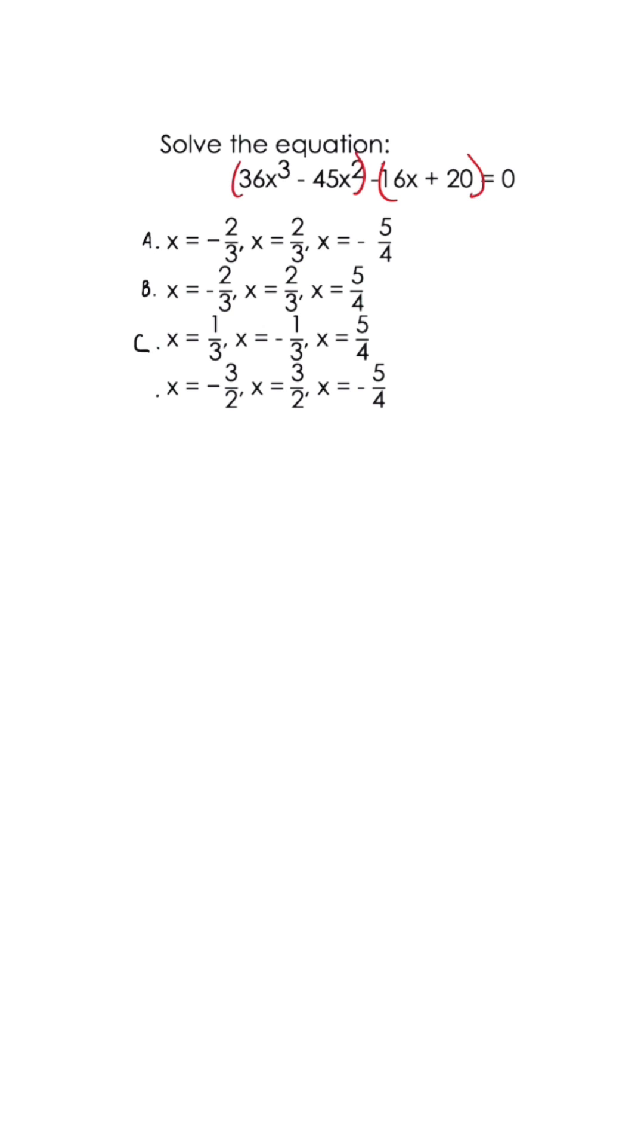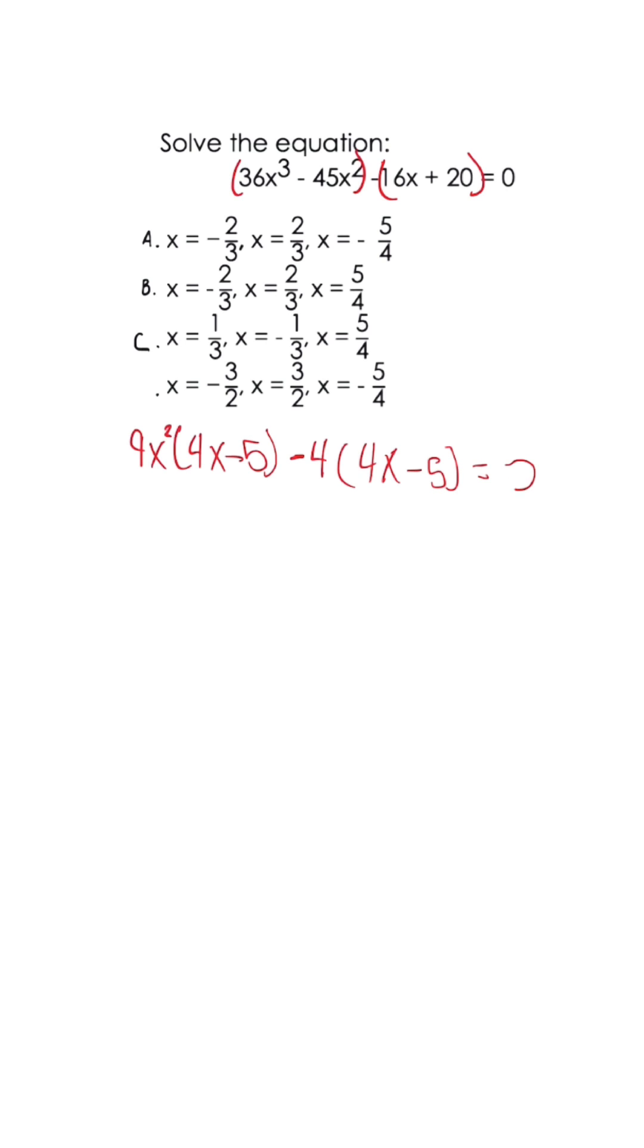For the first set of parentheses, we pull out a GCF of 9x², and we're left with 4x minus 5. For the second set of parentheses, we also pull out a 4, and we're left with 4x minus 5 equals 0.